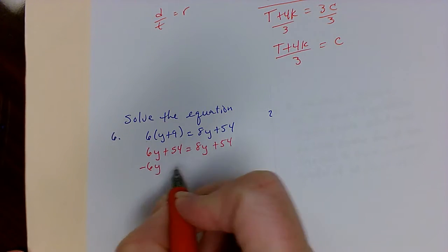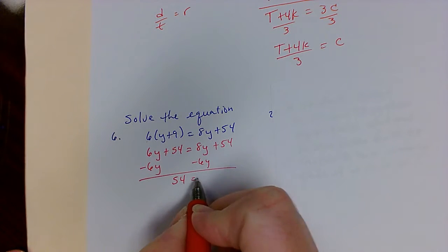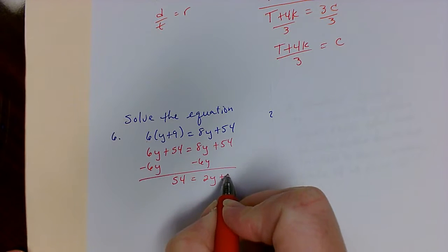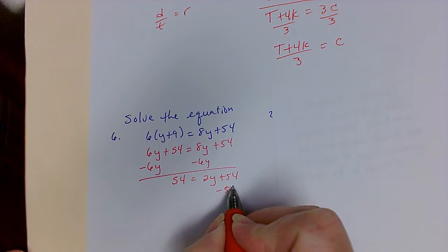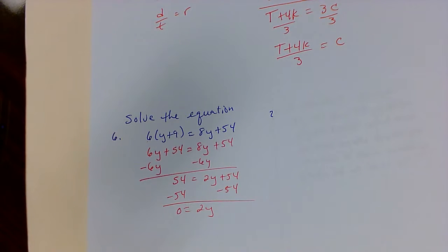I'll subtract 54 from this side and end up with 0 equals 2y. It's okay to equal 0. Now I'll divide by 2, and 0 divided by 2 is 0. You can't divide by 0, but you can divide 2 into 0.